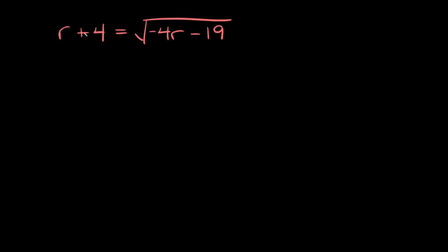Let's try one more. Here we have r plus 4 is equal to the square root of negative 4r minus 19. To get rid of a square root, all you have to do is square it, and whatever we do to one side, we do to the other. So square this whole side also.